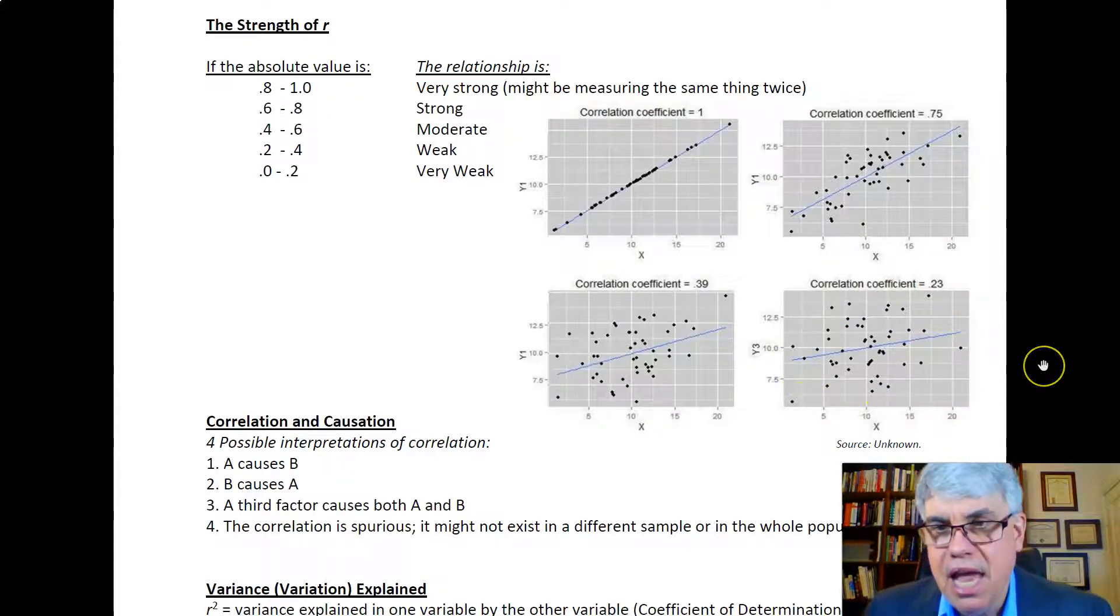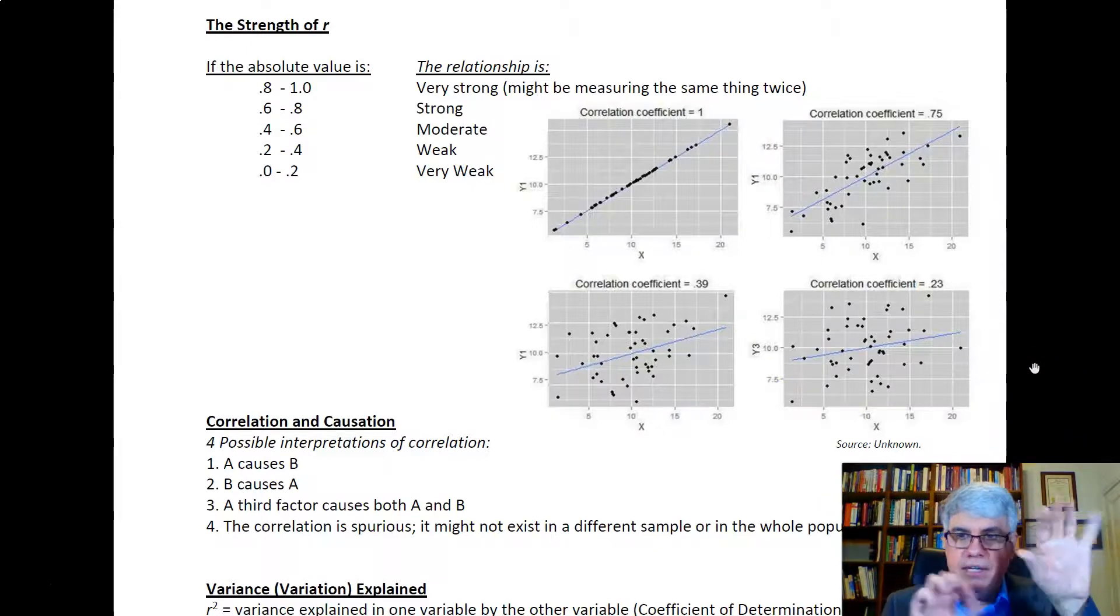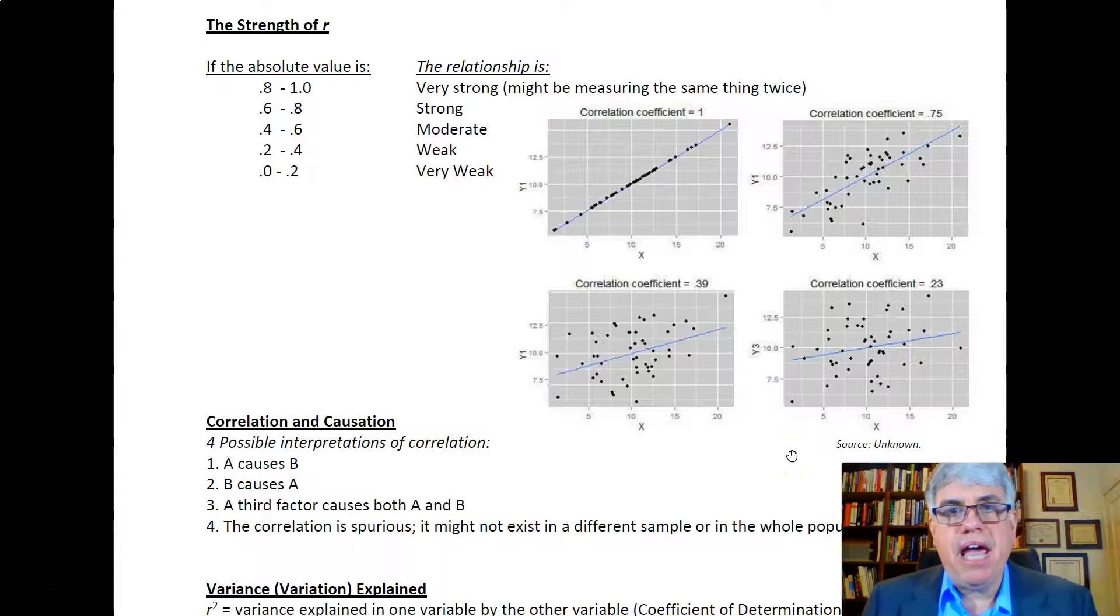The closer we get to zero, the more it looks like just random dots on the graph. But if there is a trend and it's more than what we would get just by chance, then the correlation would be significant, either positive, or if it was going down this way, it would be negative.